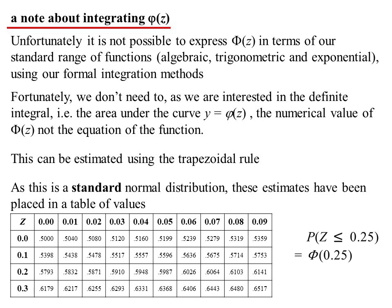So if I wanted to find the probability that it's less than or equal to 0.25, I'd just go to my table and go, oh well, there's 0.2 and there's 0.05. Where does that meet? The answer is 0.5987. It's a matter of looking up the tables.